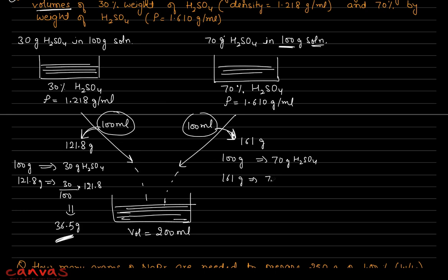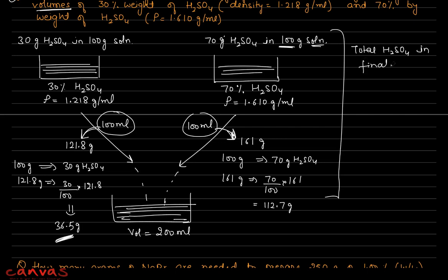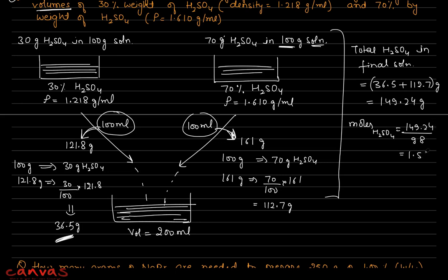Total H₂SO₄ in final solution = 36.5 + 112.7 = 149.24 g. Moles of H₂SO₄ = 149.24 / 98 = 1.523 mol. Molarity of final solution: volume = 100 + 100 = 200 mL = 0.2 L. Molarity = 1.523 / 0.2 = 7.6 M.